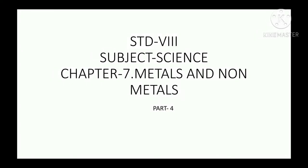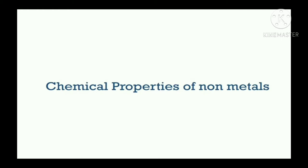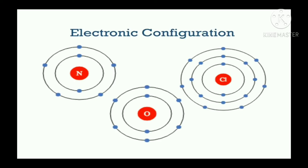Hello dear students, let us continue chapter number 7, metals and nonmetals of standard 8, subject science. In the last three parts, we learned physical properties of metals and nonmetals and chemical properties of metals. This is our fourth part. Let us start with chemical properties of nonmetals. The first chemical property of nonmetals is electronic configuration. Most of the nonmetals have 4 to 7 electrons in their valence shells, whereas metals have 1 to 3 electrons in their outermost shells.